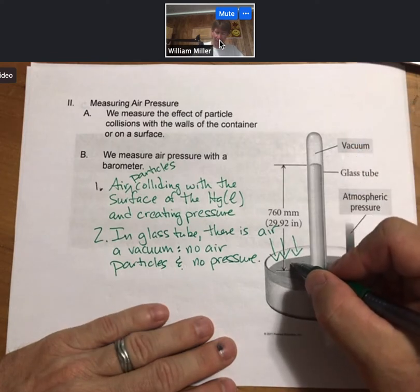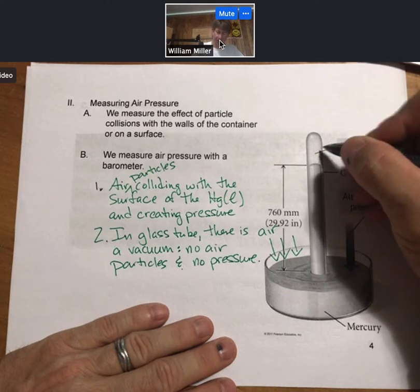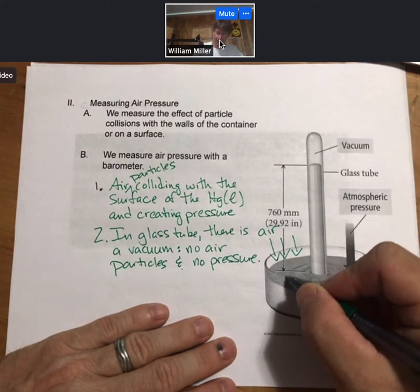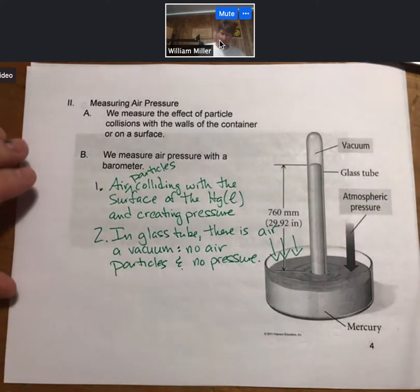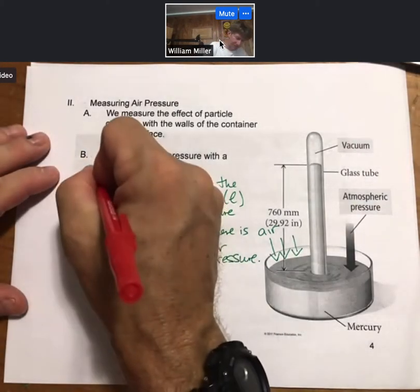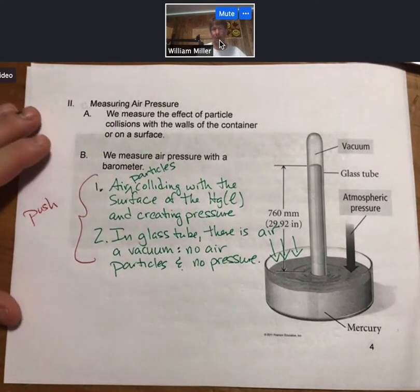And so, since there's a pressure difference, that's going to push the mercury up the tube. So no pressure, air pressure pushes the mercury up the tube. These two push the liquid mercury up the tube.